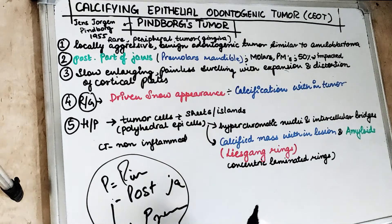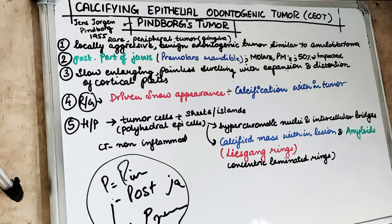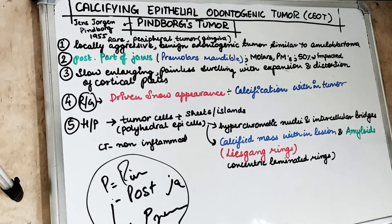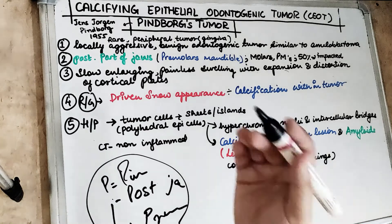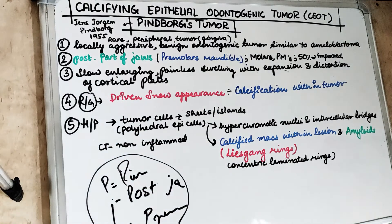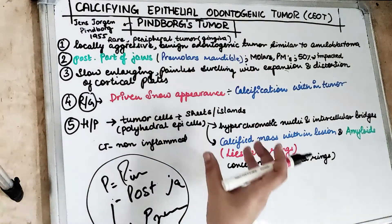It is similar to ameloblastoma in that it is derived from the cell rests of Serres, cell rests of Malassez, and reduced enamel epithelium. These are the sources of origin for the calcifying epithelial odontogenic tumour.